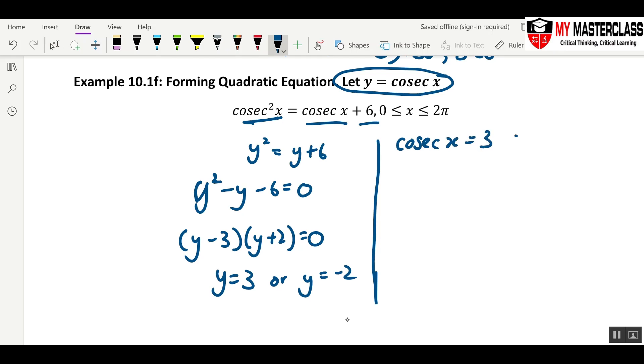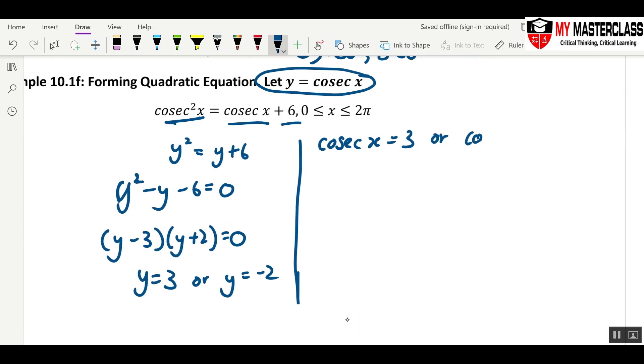Because you have let cosecant x to be y, you now have to place it back. You must write the word or. The word or is very important. Or cosecant x equals to negative 2. You flip both sides. Sine x equals to 1 over 3, or sine x equals to negative half. Then now pick your quadrant.